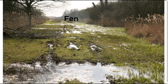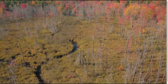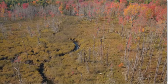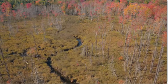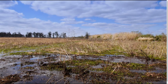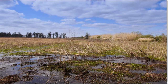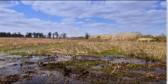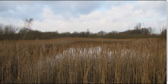A fen is also a peat-generating wetland, but it is supplied by a water source other than rainfall or snow like a bog. This water source may be an underground stream or groundwater. As a result, the soil is not as acidic as a bog and is not quite as oxygen-poor, and this allows for a greater diversity of plants and animals to live in a fen.